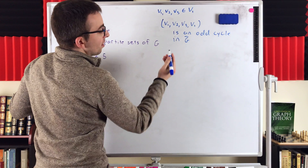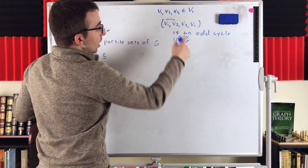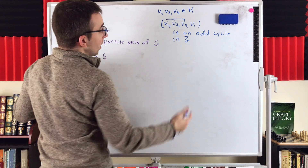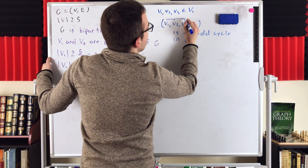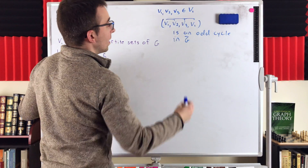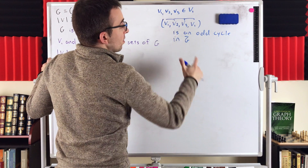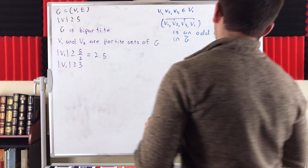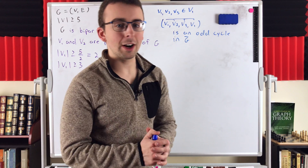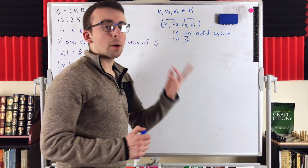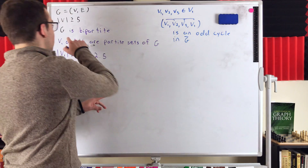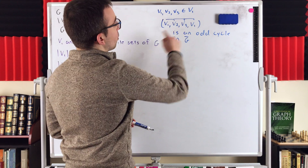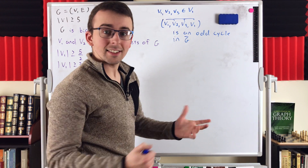Here is our odd cycle: start at v1, go to v2, then go to v3, and return to v1. We know v1 is adjacent to v2 in the complement, v2 is adjacent to v3, and v3 is adjacent to v1 — giving us a cycle of length three, which is an odd cycle in G complement. In a complement graph, wherever there was not an edge in the original graph, there is an edge in the complement — that's how we know this cycle exists.